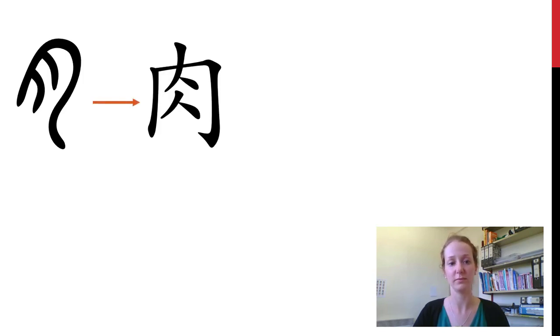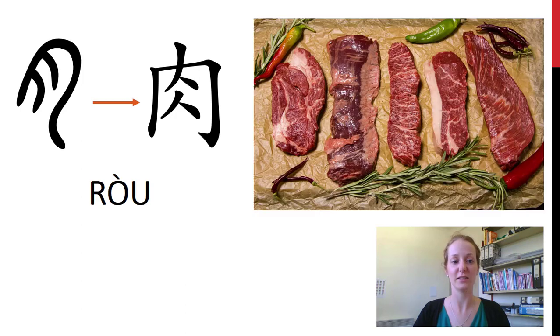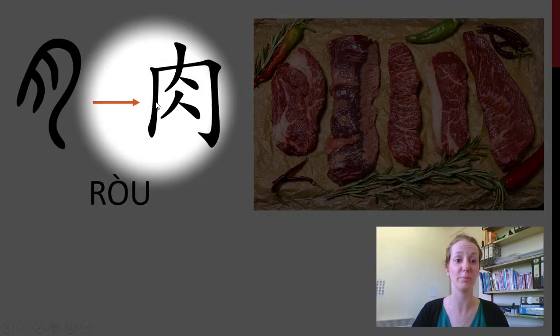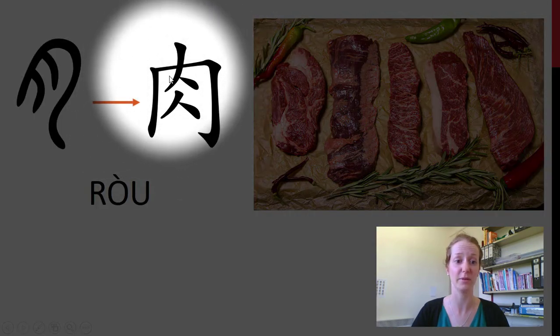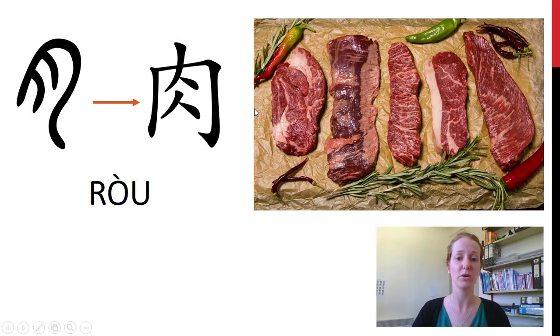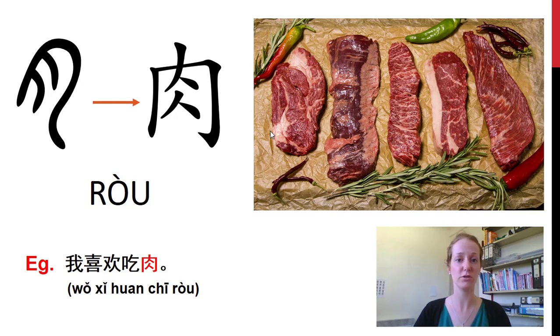第一个 — well, this is an ancient character. What do you think it looks like? Here's the modern character. This is 肉 — meat. You might imagine we've got carcasses hanging up in a butcher shop. 肉. 我喜欢吃肉. This is quite a tricky one to pronounce — practice again. 肉. 很好.